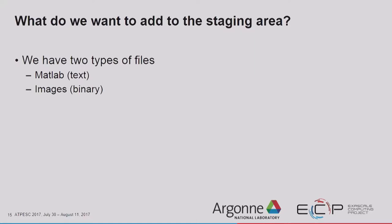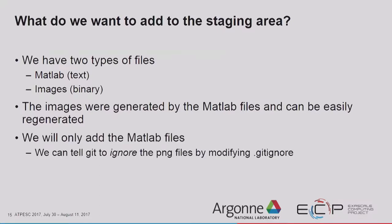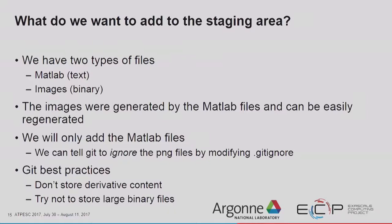First we should talk about what files we actually want to add. We have two types: MATLAB scripts (text) and image files (binary). The image files were generated by my MATLAB scripts and I can easily regenerate them, so we're only going to add the MATLAB files. We can tell Git to ignore the PNG files forever by modifying the `.gitignore` file. Best practice in Git: if you have derivative content — image files, or `.o` files from C++ — you don't want to store that in your repository. It's also a good idea not to store large binary files because of how Git does compression.